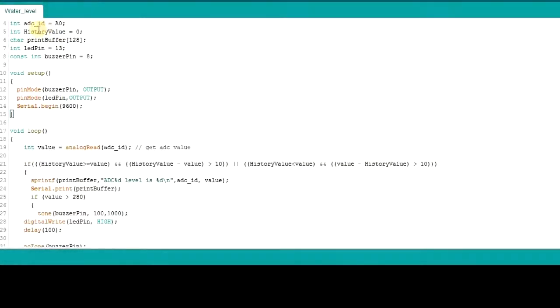Start by putting the pin that goes to the analog pin of the Arduino board and is connected to the S part of the water sensor. Then we'll declare all of these variables, the LED pin, the buffer that will be able to contain the words we want to write to the serial output, the buzzer pin which is pin 8, and we'll put them in their different modes.